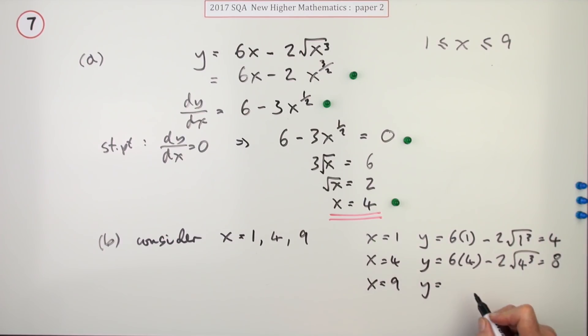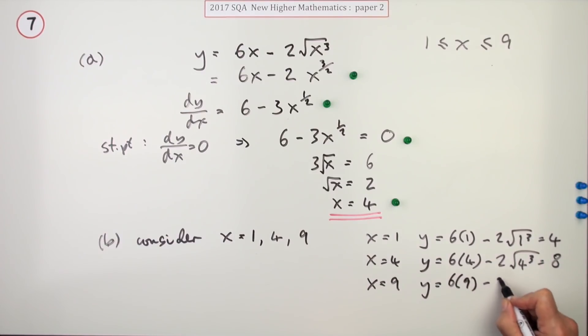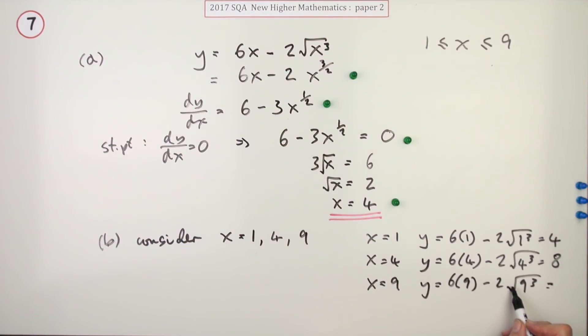What about nine? No idea until you put it in and see. 6 times 9 minus 2 times the square root of nine cubed. Same principle, put it in your calculator or do the square root first. So that means you've got the square root of nine is 3, 3 to the power 3 is 27, that's 54, but that's also 54, so that's zero. Well there's your three values to compare.